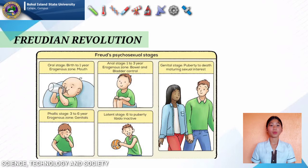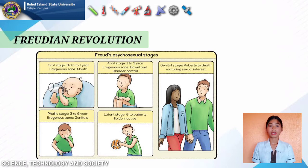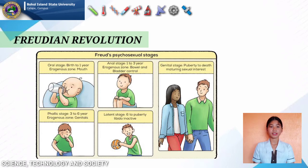The anal stage is from 1 to 3 years old; pleasure focuses on bowel or bladder elimination and coping with demands for control. The phallic stage ranges from 4 to 6 years old and focuses on the genitals, including coping with incestuous sexual feelings or the Oedipus complex. The latency stage ranges from 7 to 12 years old, focusing on dormant sexual feelings and gender identity. The genital stage begins at 13 years and above, focusing on the maturation of sexual interests.